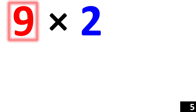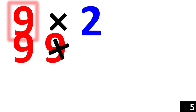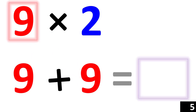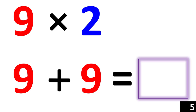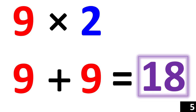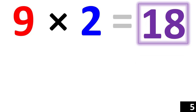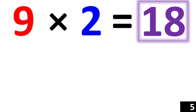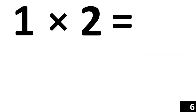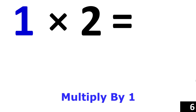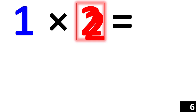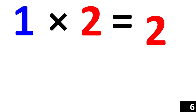9 times 2 is the same thing as 9 plus 9. 18. So 9 times 2 equals 18. For 1 times 2, we just use the rule of 1. Any number times 1 is that number. So 1 times 2 is equal to 2.